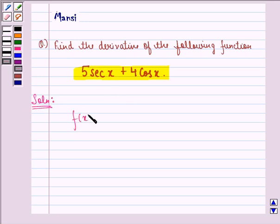Now, f(x) is given to be 5 secant x plus 4 cos x. So f'(x) will be derivative with respect to x of this function plus derivative with respect to x of this function.